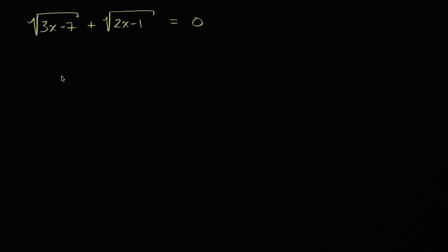One thing we could do is try to isolate each of the radicals on either side of the equation. So let's subtract this one from both sides so I can get it onto the right hand side. So I'm subtracting it from the left hand side and from the right hand side.